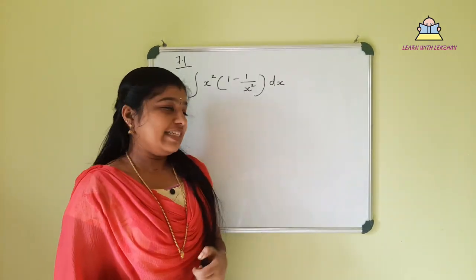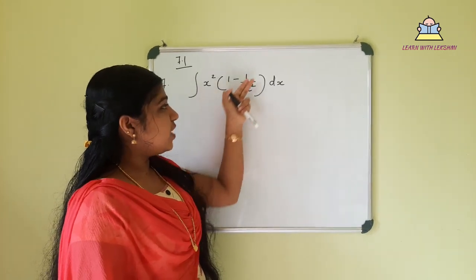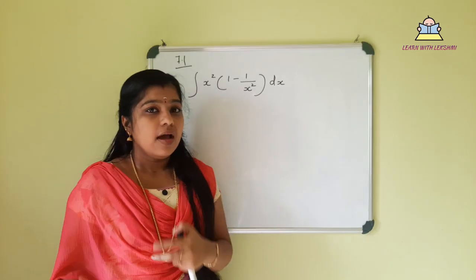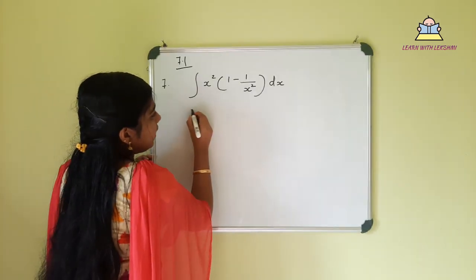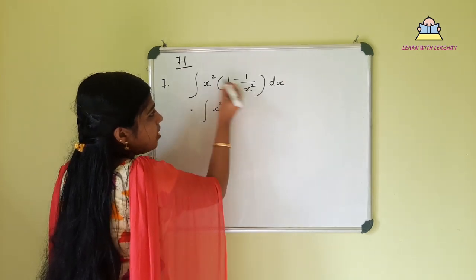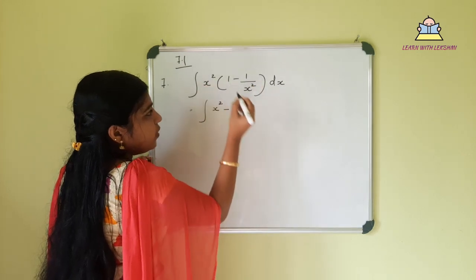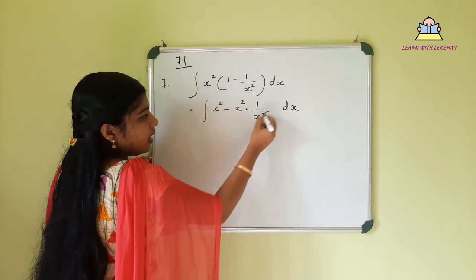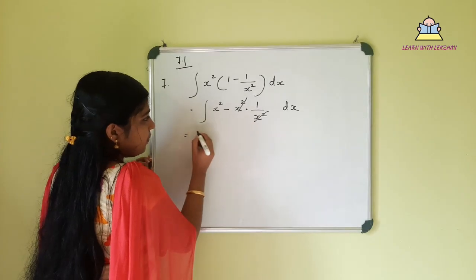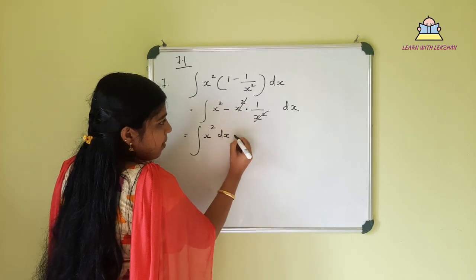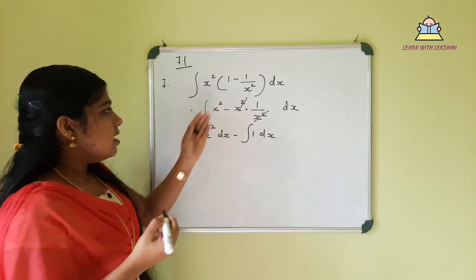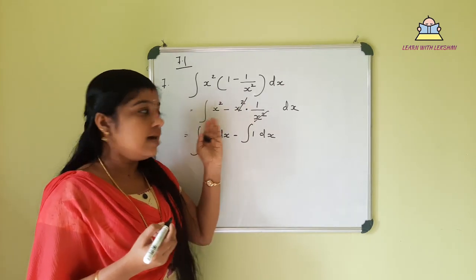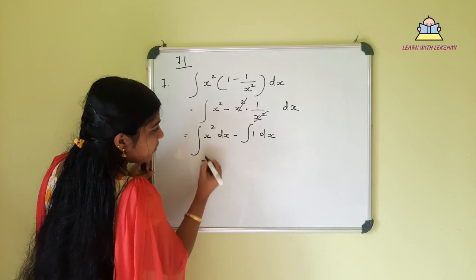Next problem: integral of x squared times (1 minus 1 by x squared) dx. We open the bracket and multiply through: x squared times x squared minus x squared times 1 by x squared. The x squared terms cancel where applicable, giving us separate integrals of x squared and 1, which we will integrate using the power rule.